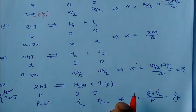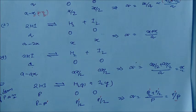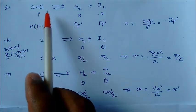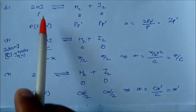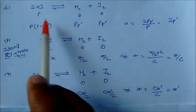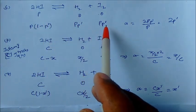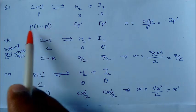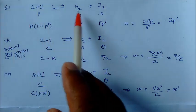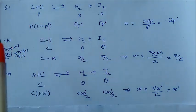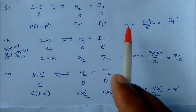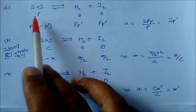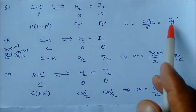This is another way to express dissociation. Again for 2HI ⇌ H₂ + I₂, writing pressures as p·p', p·p', and p·(1 minus p'), alpha = 2p'/P. So alpha = summation of the product pressures divided by the total initial pressure P.